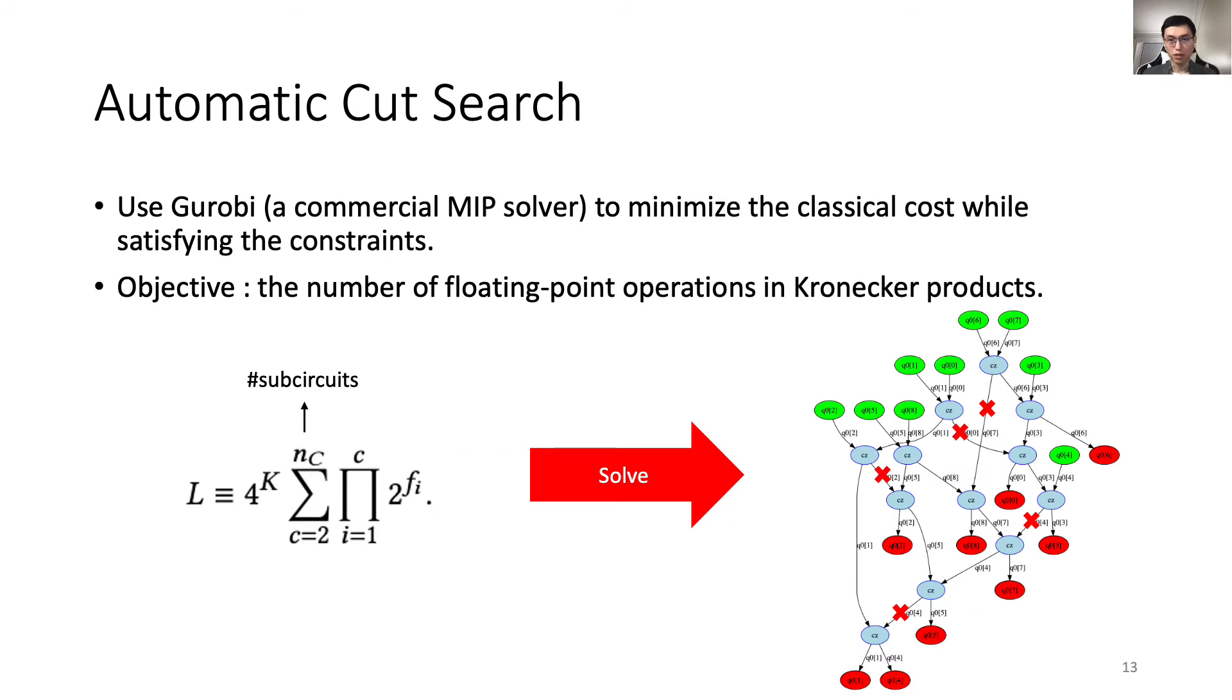We use Gurobi, a commercial MIP solver, to minimize the classical cost while satisfying the constraints. We choose to use the total number of floating-point operations in the classical reconstruction as the objective. MIP is able to find optimal solutions usually within seconds for the smaller benchmarks, and within minutes for the largest ones we studied in the paper.